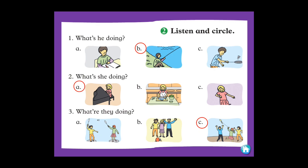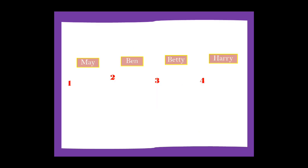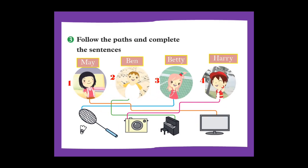What is he doing? Follow the path and complete the sentence. The first one is May — what is she doing? She is watching TV. Number two: Ben — try to find out what Ben is doing. Yes, he is playing the piano. Very good. He is playing the piano.